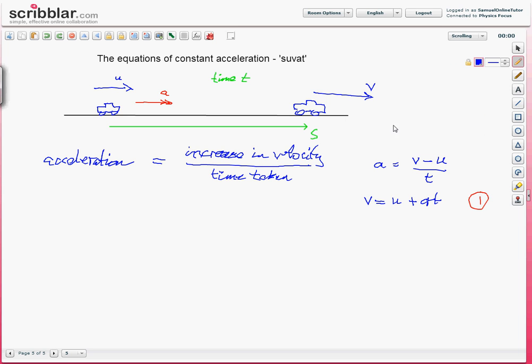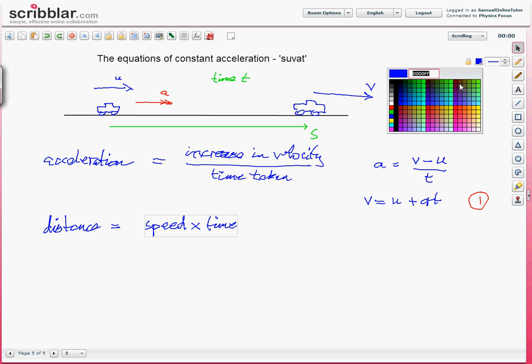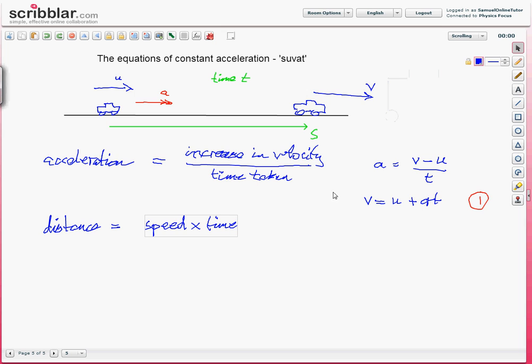If you think back to GCSE level, distance equals speed times time. The trouble is we don't have a constant speed here. We are starting with the velocity of u, ending up with a different velocity v. Obviously either of these might actually be going to the left, in which case it would have a negative value. We are putting it in as positive going towards the right. So that said, we can't talk about just the speed, what we need to talk about here is